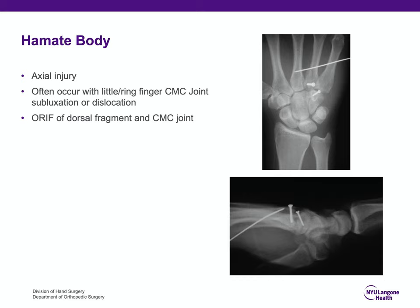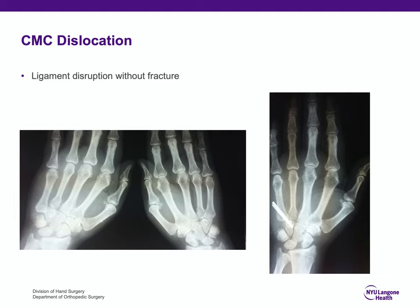The second hamate fracture is the axial injury, which usually occurs with little and ring finger carpometacarpal joint subluxation or dislocation, and the dorsal aspect of the hamate fractures in the coronal plane. This can be treated with screw fixation from dorsal to volar into the dorsal hamate, as well as fixation of the carpometacarpal subluxation. It's important to remember that the little finger carpometacarpal joint can also be dislocated — a purely ligamentous injury — which requires closed reduction and usually percutaneous Kirschner wire fixation.